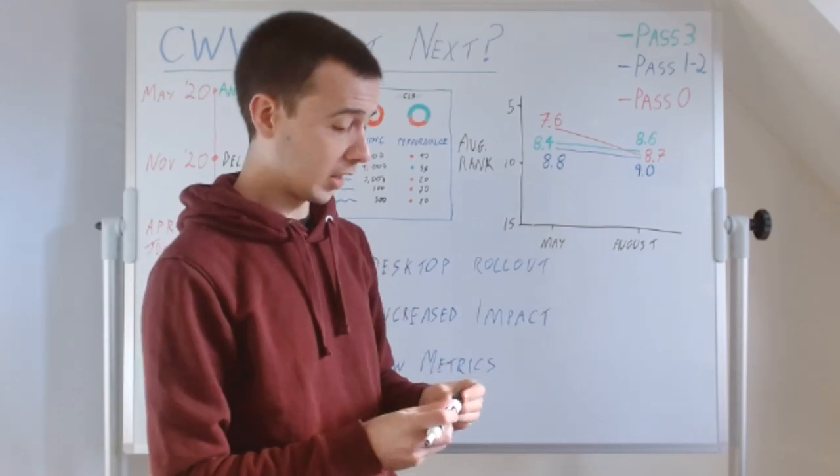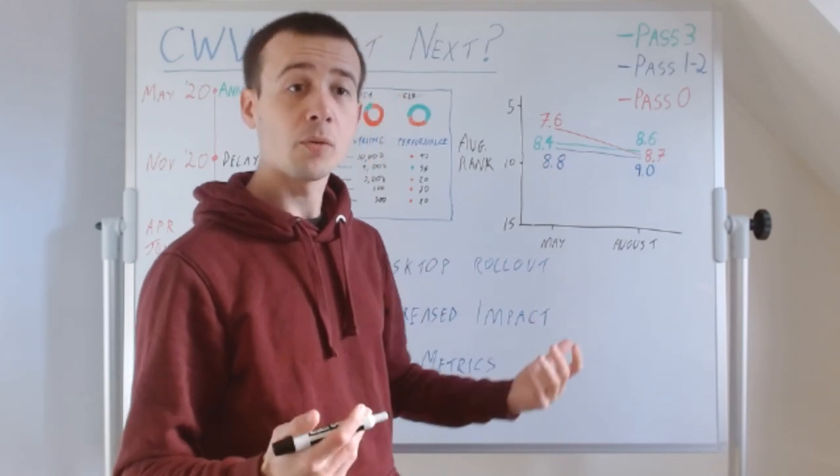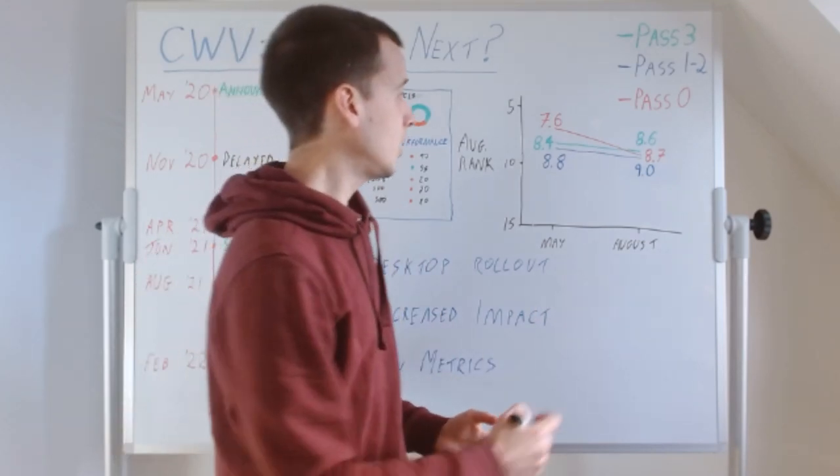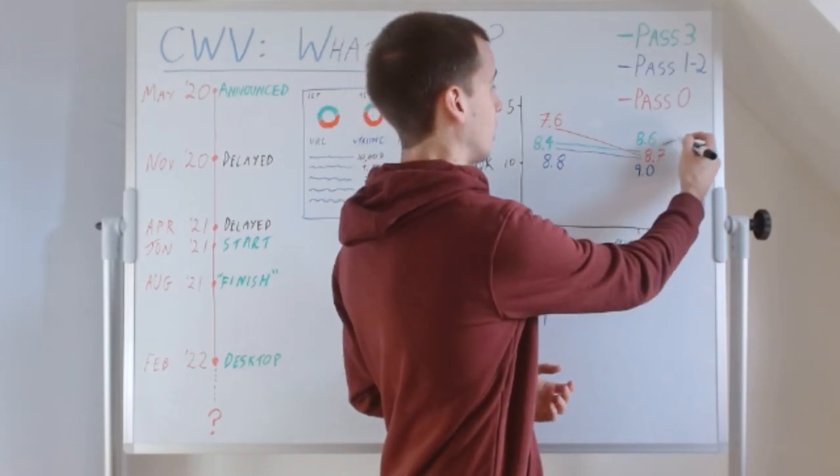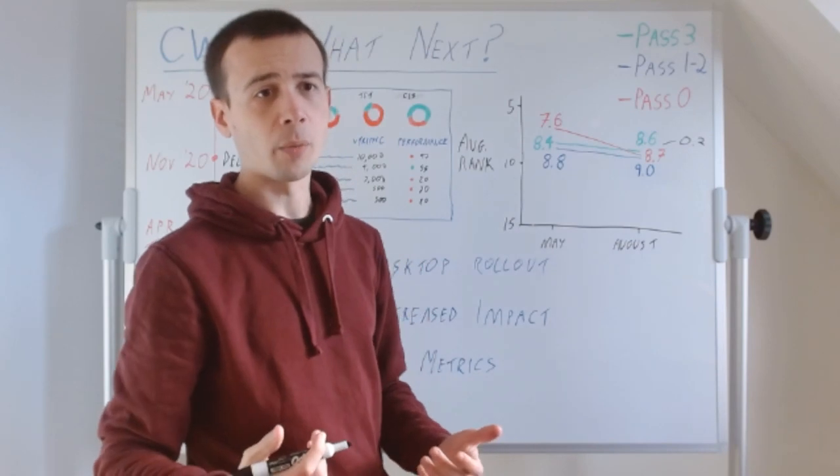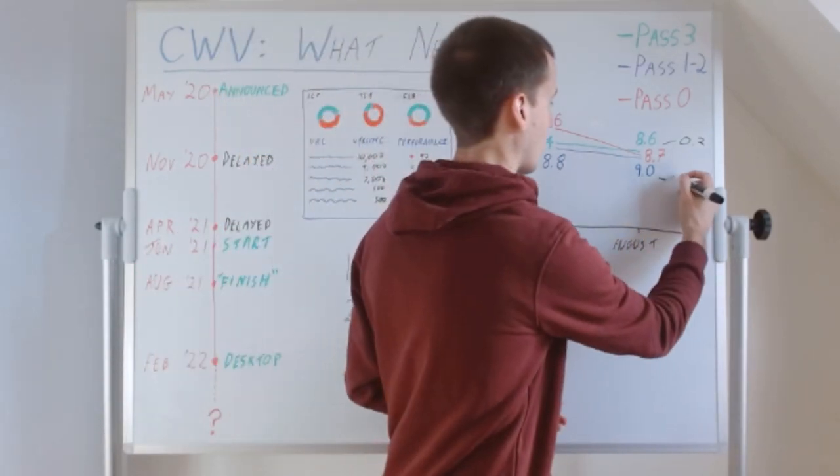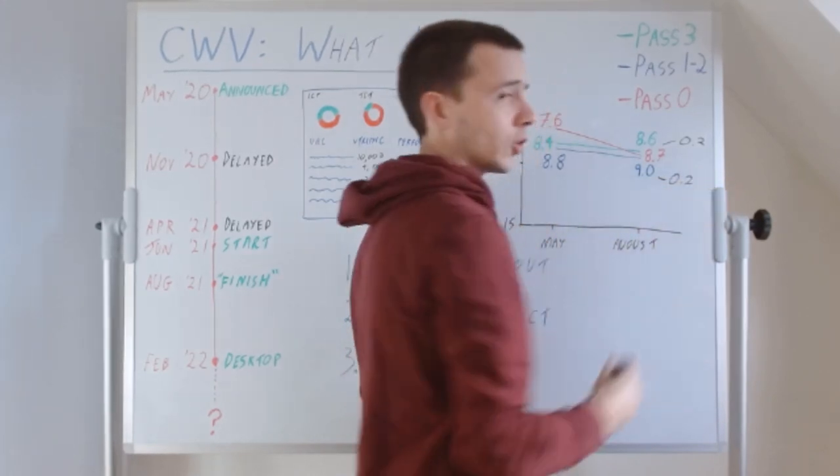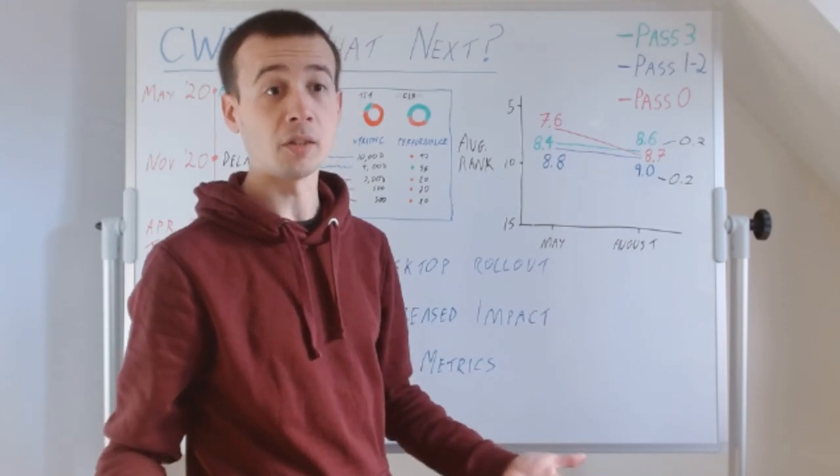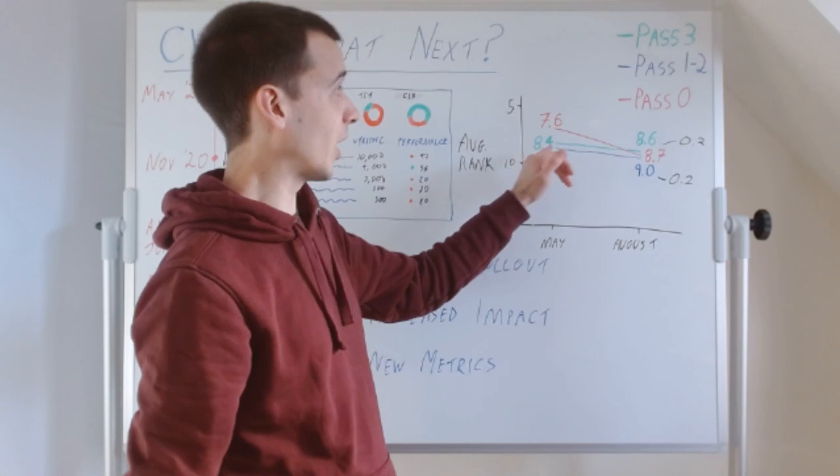So the thing to notice here is the pages passing all three, all three thresholds, these are the ones that Google said were going to get a big boost. And these went down by 0.2, which is about the same as the pages that were passing 1 or 2 thresholds. So I'm going to go out on a limb and say that that was just the general shift caused by incorporating more pages into Crux data.